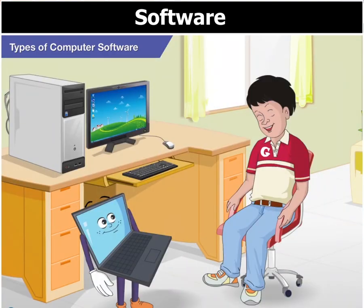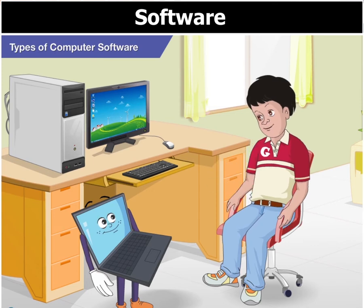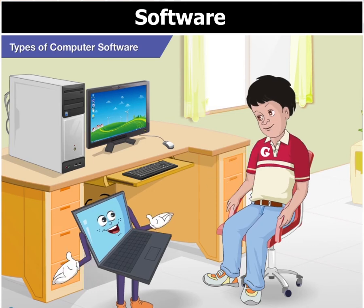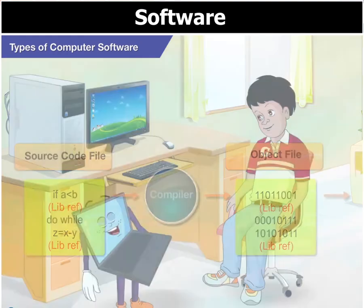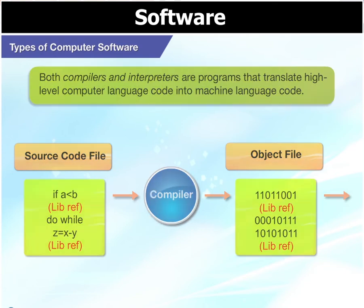What's the difference between compilers and interpreters? I think they do the same job. Both compilers and interpreters are programs that translate a high-level computer language code into machine language code.